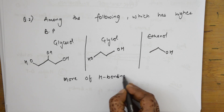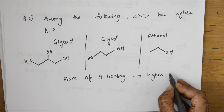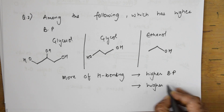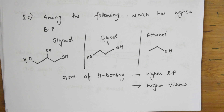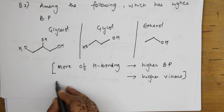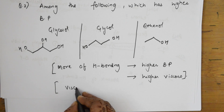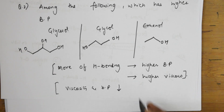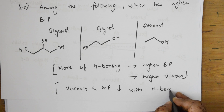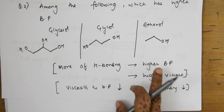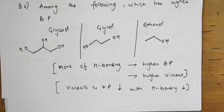So the key concept is: more hydrogen bonding leads to higher boiling point and higher viscosity. Conversely, if hydrogen bonding decreases, viscosity and boiling point also decrease. Therefore glycerol has the highest boiling point and is the most viscous among the three.